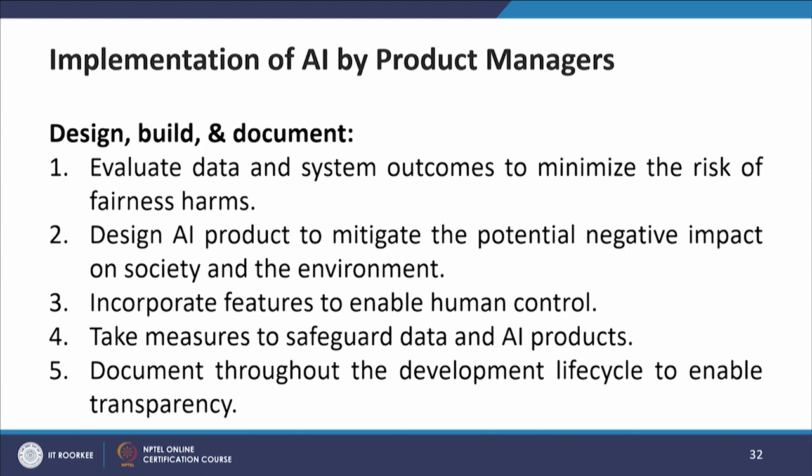The next phase is design, build, and document. The five steps are: first, evaluate data and system outcomes to minimize the risk of fairness harms; second, design AI products to mitigate potential negative impacts on society and the environment; third, incorporate features to enable human control; fourth, take measures to safeguard data and AI products; and fifth, document throughout the development life cycle to enable transparency.